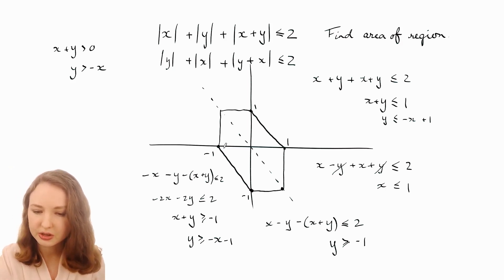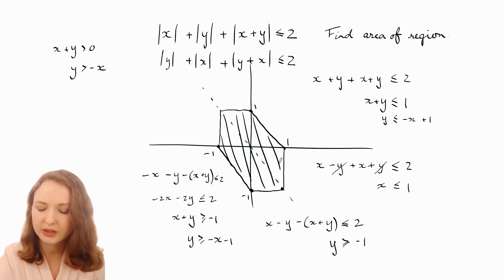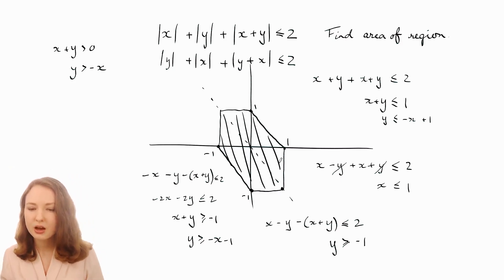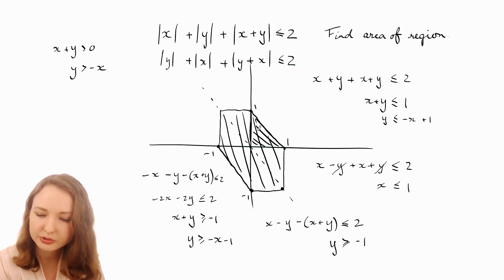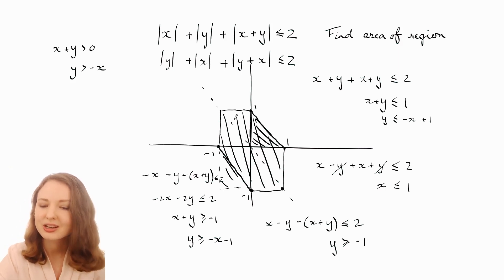Okay, so this is the region that we want, all of this in here. We're just going to work out that area. Now you could split it into these two squares and the two triangles and do like half base times height, or you could imagine cutting this bit off and sticking it down there to make a full square. So we get three full squares, so the area is going to be three. That's the answer.